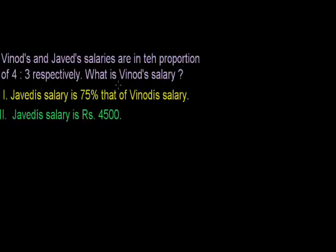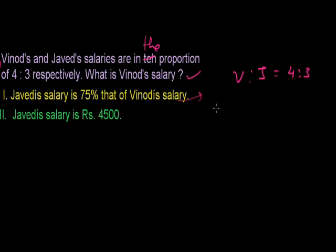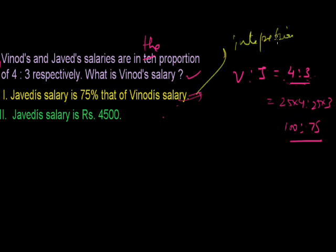Next problem: Vinod and Javed's salaries are in the proportion of 4 to 3 respectively. What is Vinod's salary? Statement one: Javed's salary is 75% of Vinod's salary. If I multiply the ratio 4:3 by 25, I get 100:75, which is exactly the same statement as given in the question — it's just a reinterpretation of the above statement. So obviously I'm not getting the answer from statement one alone.